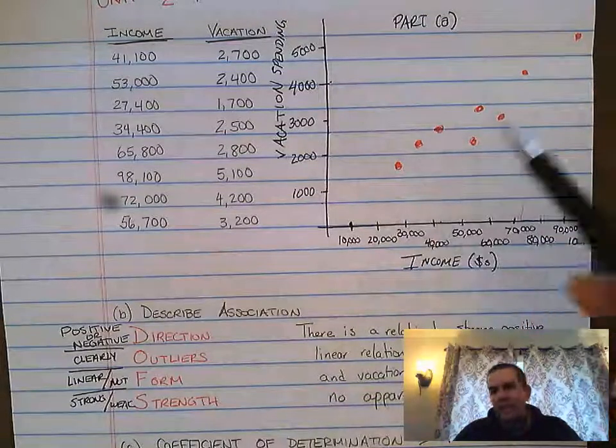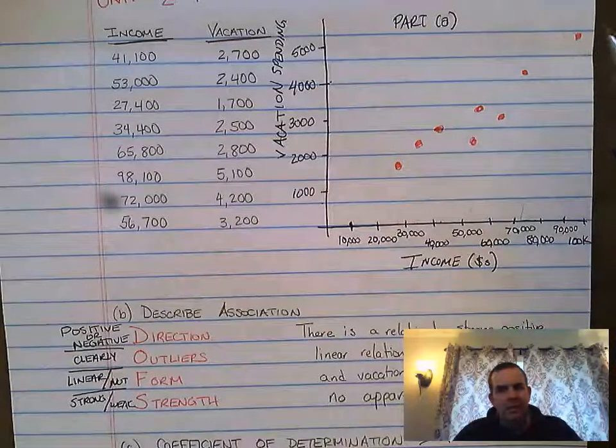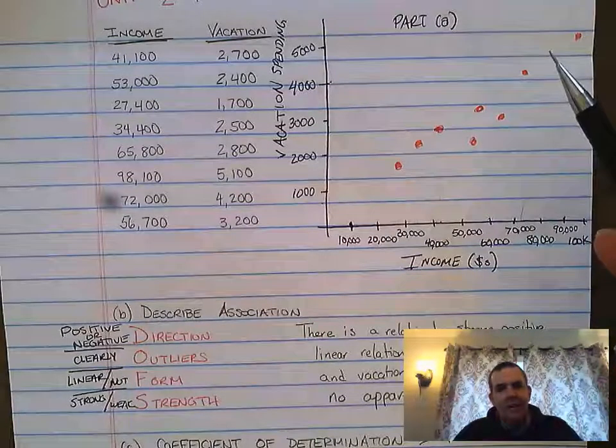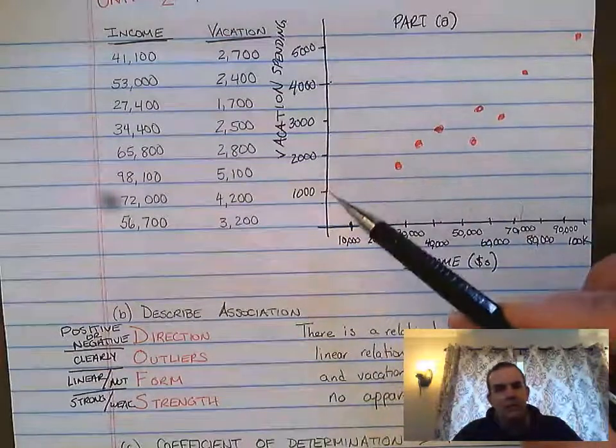The last thing is outliers. There's no outliers. I know people may question this, but I will tell you this isn't really an outlier. An outlier would be something outside the pattern of the data here or way, way off.